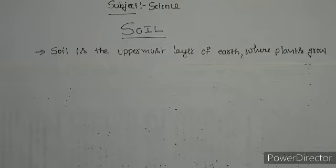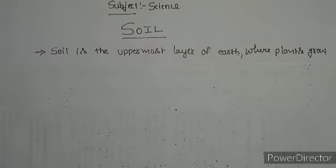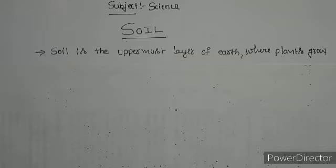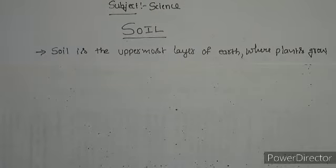Soil provides plants with nutrients and water that they need to grow. It gives shelter to many small living things such as earthworms, tiny microbes, rats, ants, and rabbits. People also use mud to make kachha houses. We get metals and petrol from underground soil, and potters use clay soil to make clay pots. Without soil, most life on earth would not survive — soil is such an important resource.